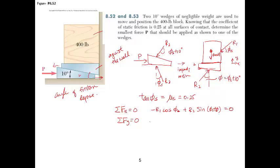My forces in the y direction is minus 400 minus R1 sin phi_s plus R2 cosine phi_s plus 10, and that's equal to 0. So we have two equations and two unknowns.